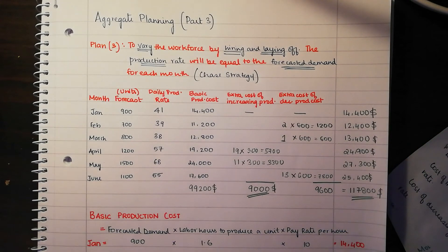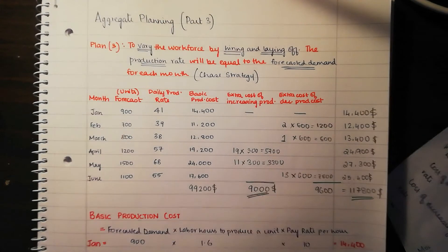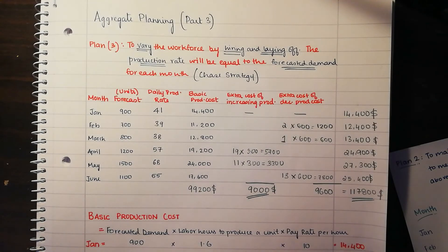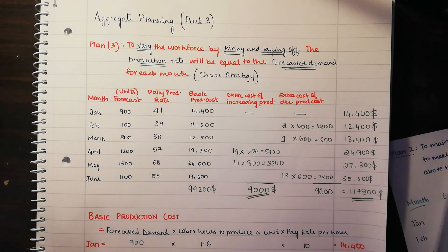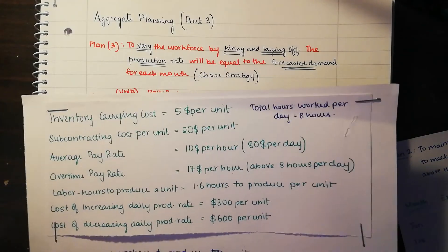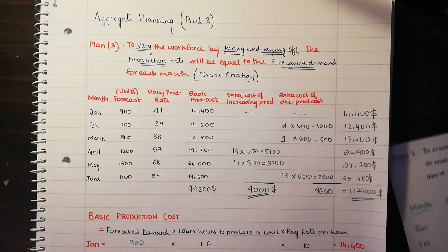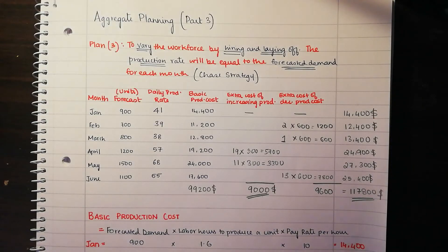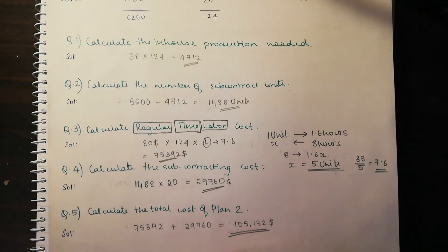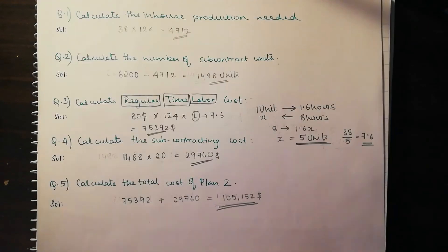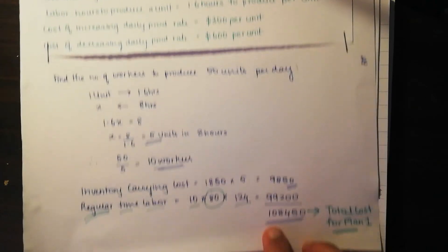This concludes plan three. After finding the total cost of plan three, we can compare it to our other plans. Plan three is going to be $117,800. For plan two, it was $105,152. For plan one, it was $108,450. These are from my previous videos.